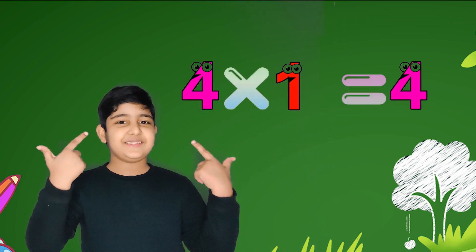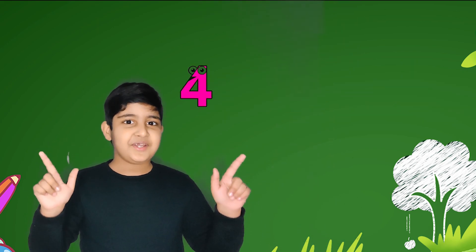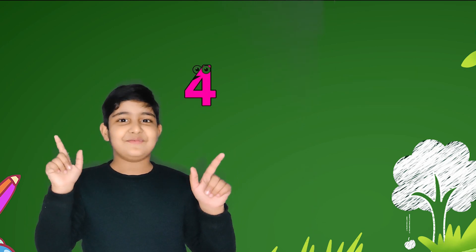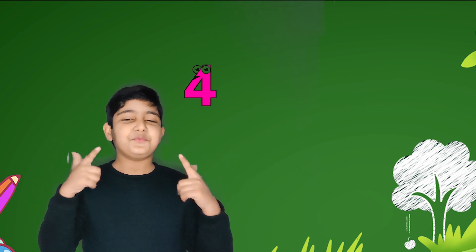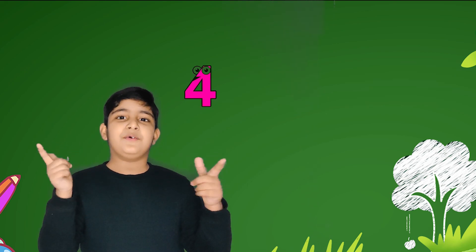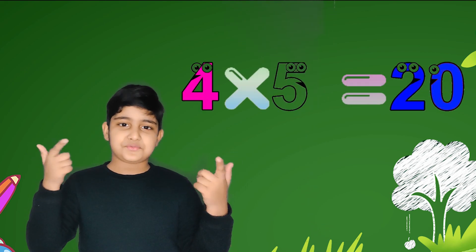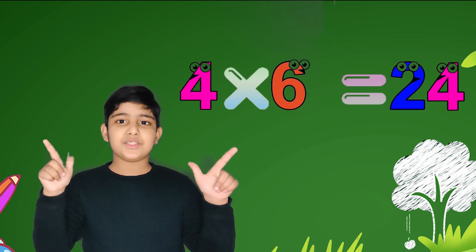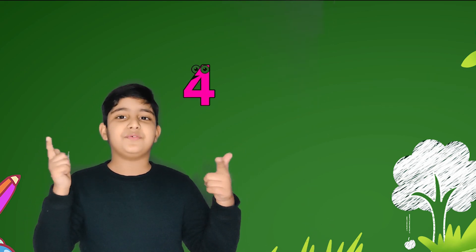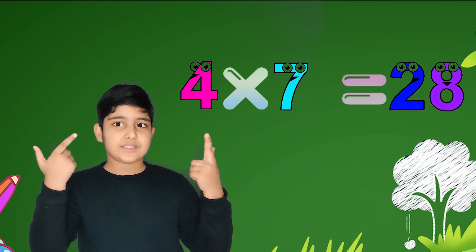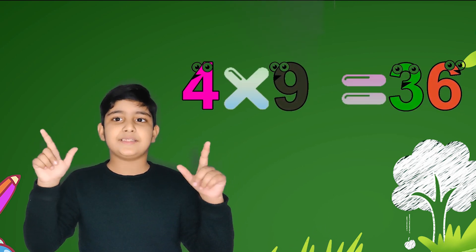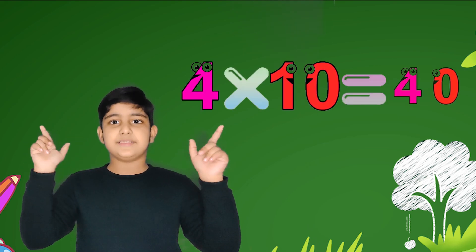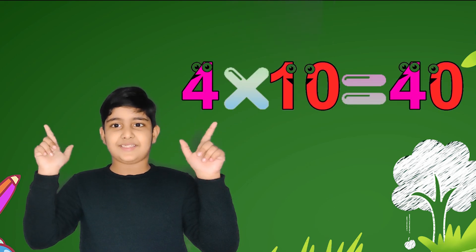Four ones are four, four twos are eight, four threes are twelve, four fours are sixteen, four fives are twenty, four sixes are twenty-four, four sevens are twenty-eight, four eights are thirty-two, four nines are thirty-six, four tens are forty.